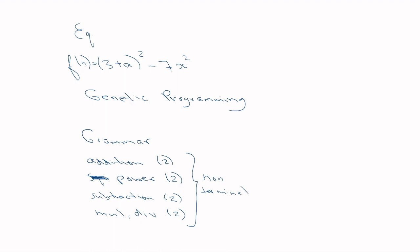Your terminal nodes are constants — like three and seven — and variables like x, a, z, and so forth. This grammar definition is a critical step in genetic programming. The tree representation is generalized: genetic programming always uses a tree, and what matters is correctly defining the grammar first.